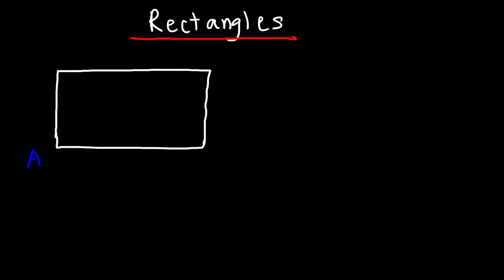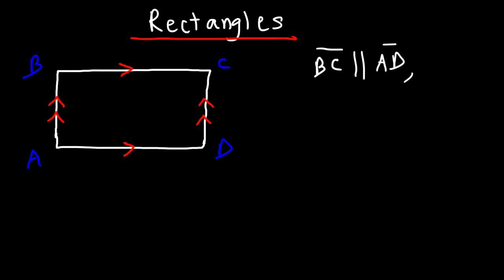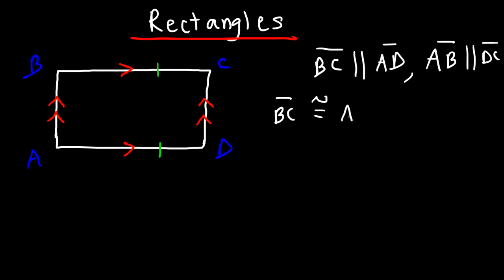Consider rectangle ABCD. Like a parallelogram, opposite sides are parallel: BC is parallel to AD, and AB is parallel to DC. In addition, just like a parallelogram, opposite sides are congruent — so BC is congruent to AD, and AB is congruent to DC.